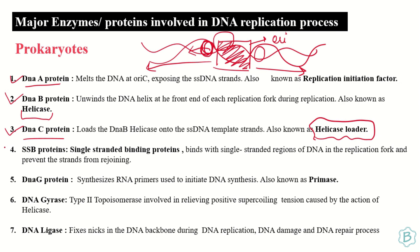Next are the SSB proteins, or single-stranded binding proteins. Every time the two parental strands separate, they have to remain separated and exposed — there should be no re-annealing or rejoining of the parental strands. To prevent this, SSB proteins bind in such a manner that no rejoining occurs.